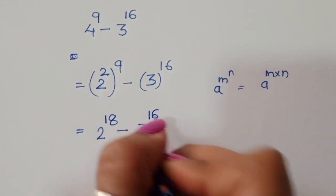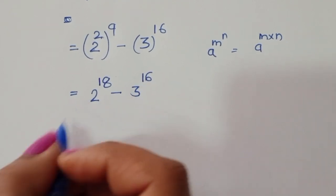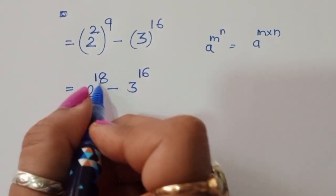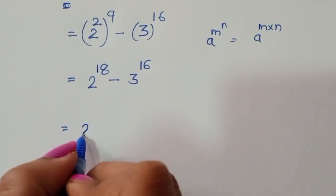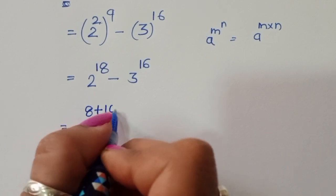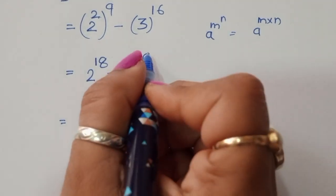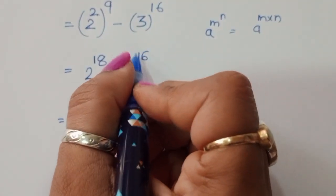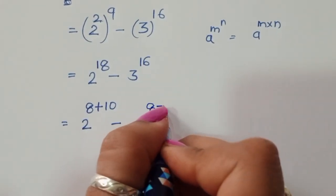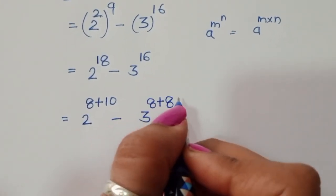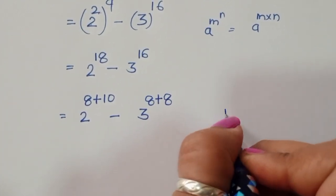Now we have 2 power 18 minus 3 power 16. We convert 18 as 8 plus 10, so 2 power 8 plus 10, minus 3 power 16. We again convert 16 in terms of 8: so 8 plus 8, giving 3 power 8 plus 8. We will use the formula: a power m plus n equals a power m times a power n.